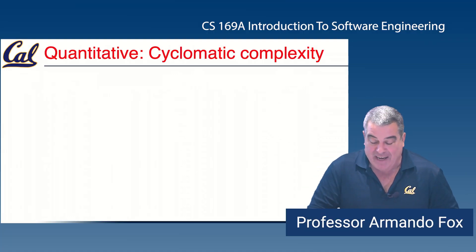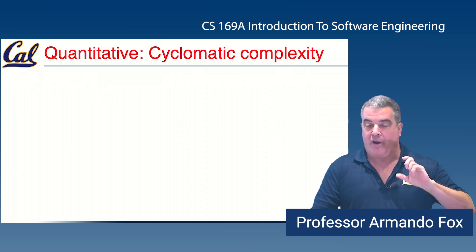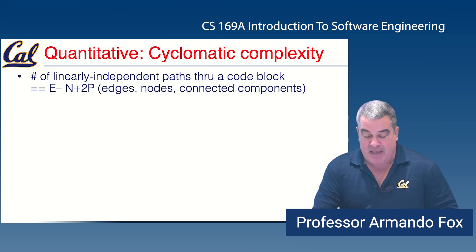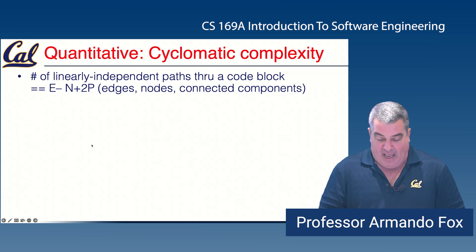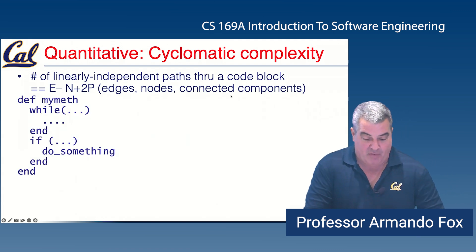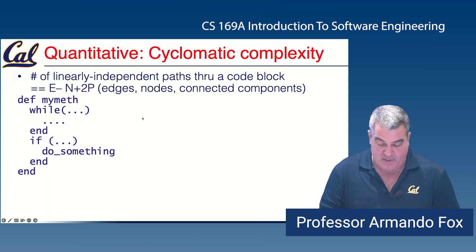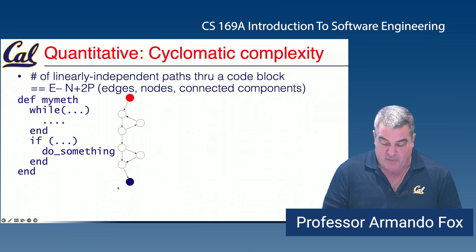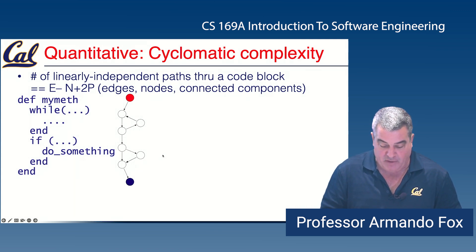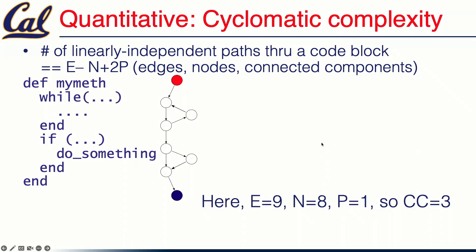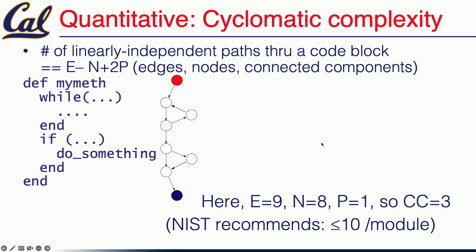Another quantitative measure is cyclomatic complexity, which tries to capture how many different paths there are through a block of code. You create a graph corresponding to the control flow and count the number of edges, nodes, and connected components. Here's a simple example of a method with a while loop and an if statement with no else clause. You've got nodes for the entry and exit points, a loop body, and a conditional that may or may not be followed. Counting edges, nodes, and components gives a cyclomatic complexity of three — not bad, since NIST recommends a score of less than about 10 per module. The effect is super-linear because you're squaring each component, so nested conditionals can quickly screw up your score.